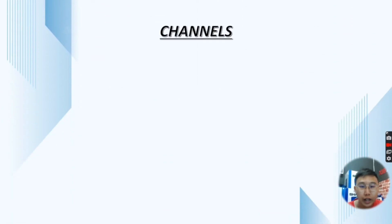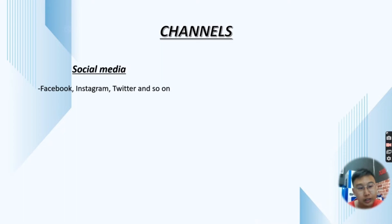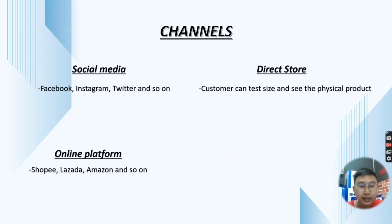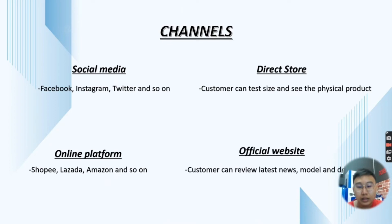Next, it's about Channels. We have social media such as Facebook, Instagram, Twitter, and so on. We also have a direct store so customers can test the size and see the physical product, so there is no need to worry about buying the wrong size. We also use online platforms such as Shopee, Lazada, Amazon, and so on, letting customers buy our products very easily even from home. Lastly, we have our official website where customers can view our latest product news, models, and designs, as everything is first updated there.